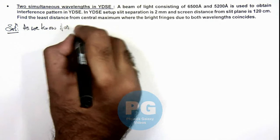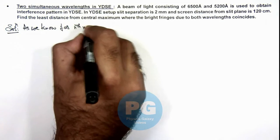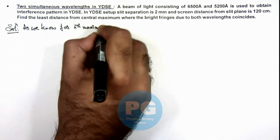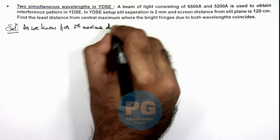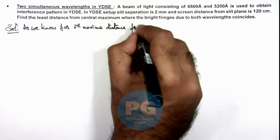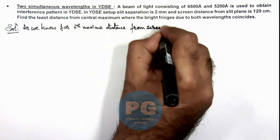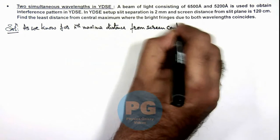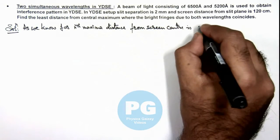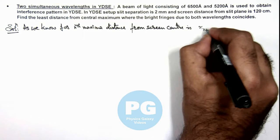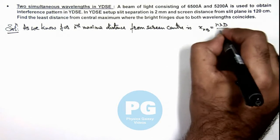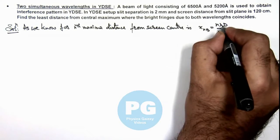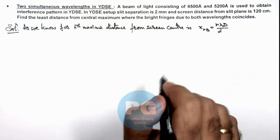For nth maxima, distance from screen center is written as x_n bright, is written as n lambda D by small d. We can write it lambda 1 as we are writing for the first wavelength.